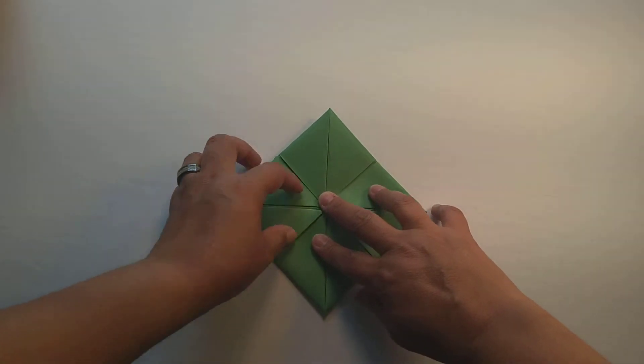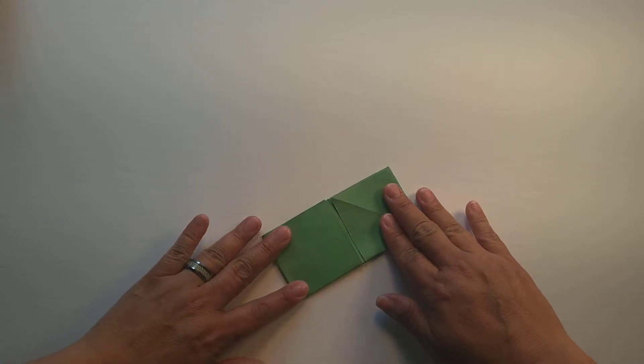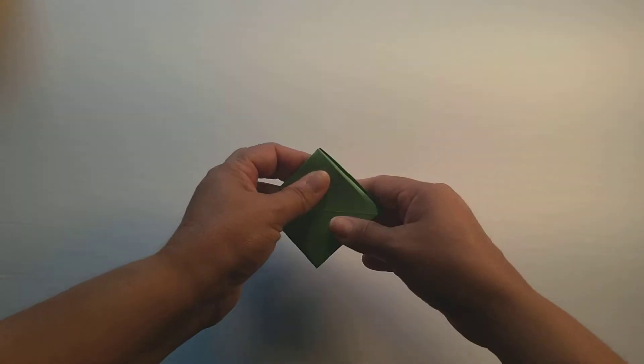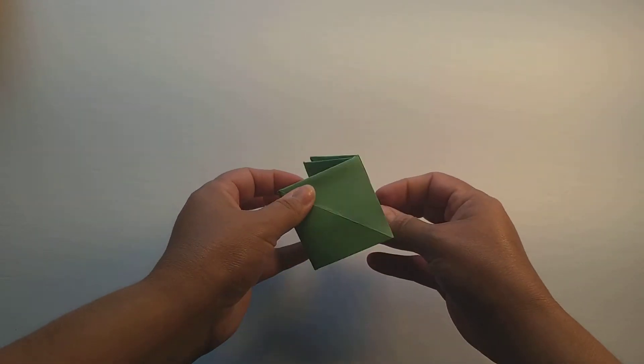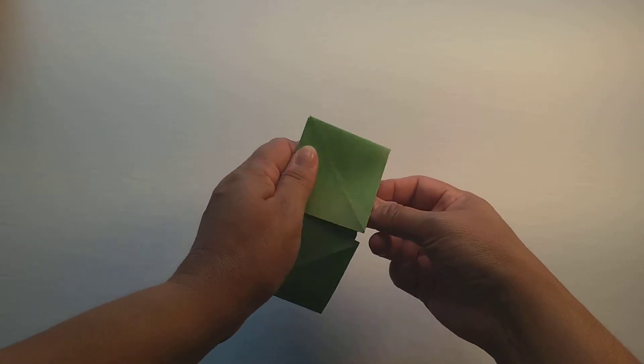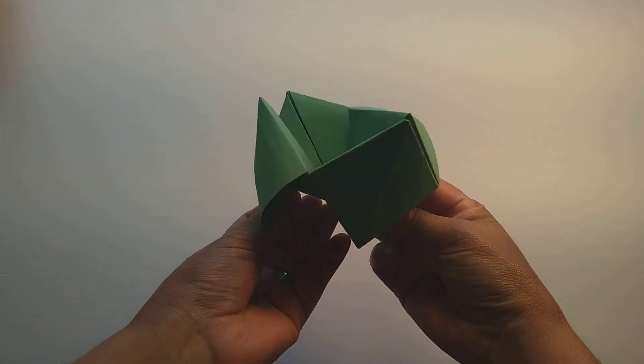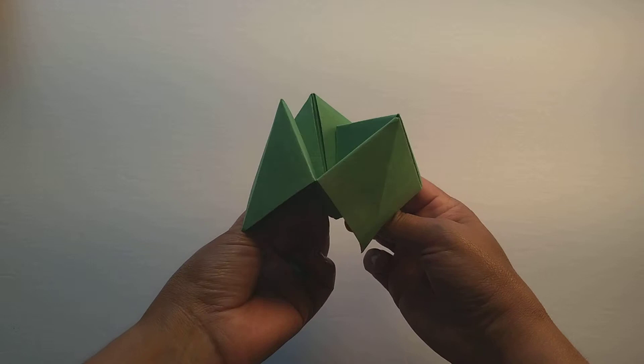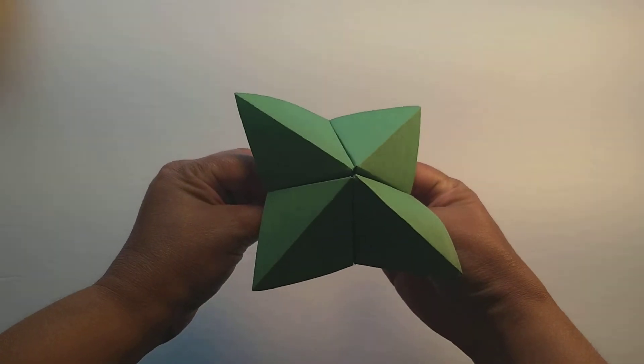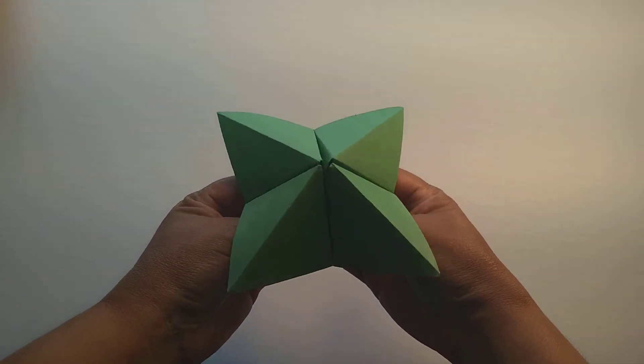Once you have that in, you're going to fold. Make sure you have a nice crease because that's going to help you open up the cootie catcher in the following way. Okay, like this.